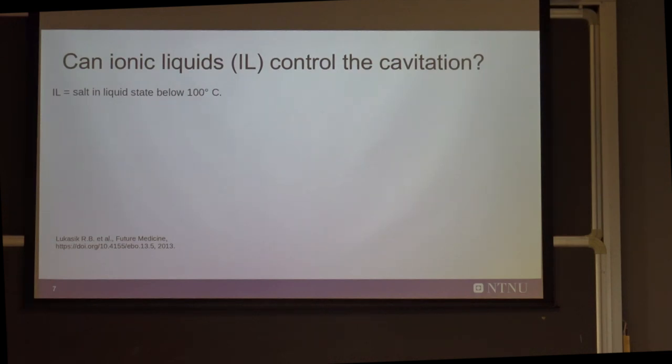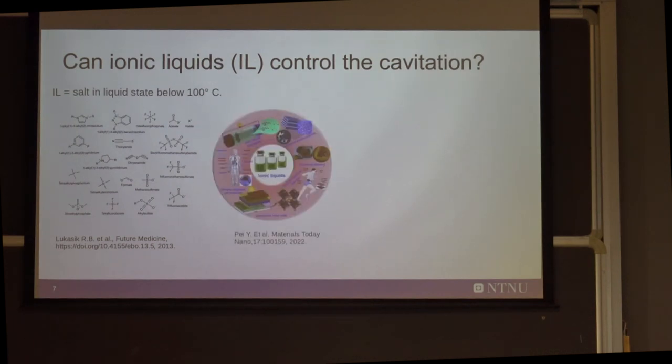So the ionic liquids are basically, it's a very simple, it's a salt. There is two ions, positive and negative ions that are in a liquid state at a temperature that is lower than 100 degrees Celsius. And so ionic liquids are interesting because they are many, so you can have million compounds you can combine in a lot of ways so they have huge application in medicine and it's very cheap also to produce. So it's something that it's very promising.